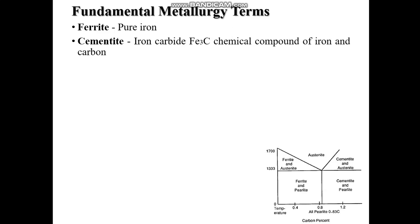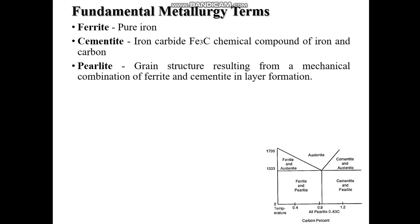Pearlite is formed by decomposition of austenite at 723 degree Celsius. The decomposition of austenite leads to the formation of a eutectoid mixture of 87% ferrite and 13% cementite, which is called pearlite.